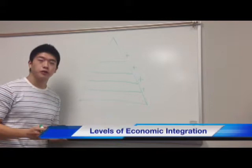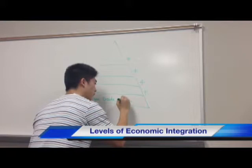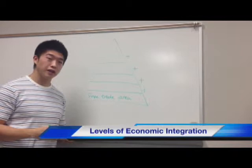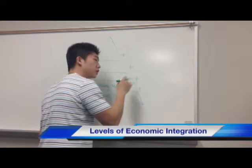Now, what are some of the different levels of economic integration? First, we have the free trade area, which means there is free trade among member countries with no tariffs and non-tariff trade barriers between them. Next, we have a customs union, which includes everything of a free trade area plus common external tariffs.